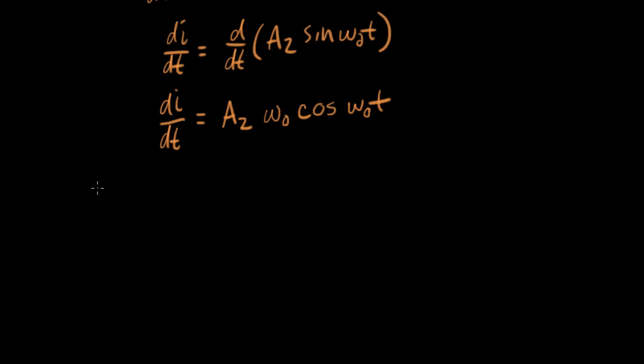We apply our initial condition. Let's go to t equals zero. We know that dI/dt was V-naught over L equals A2 omega-naught cosine of omega-naught times zero. Cosine of zero goes to one, and so we can solve for A2. A2 equals V-naught over L omega-naught.